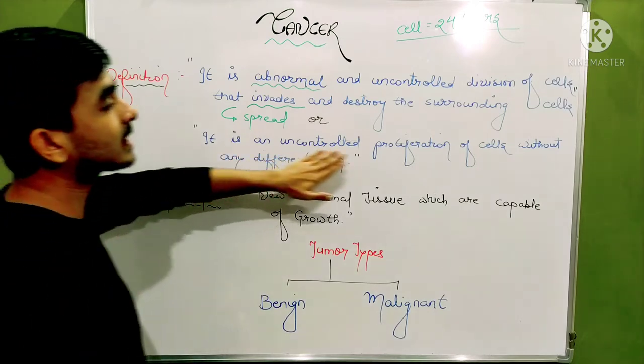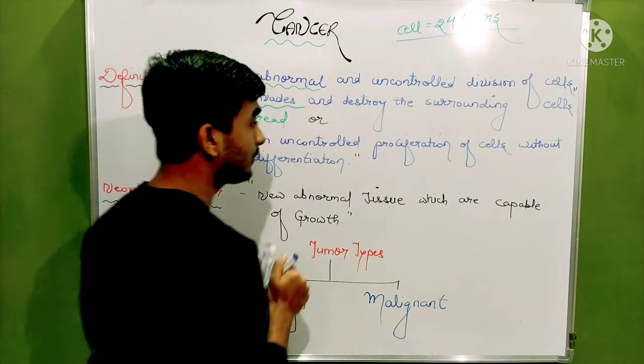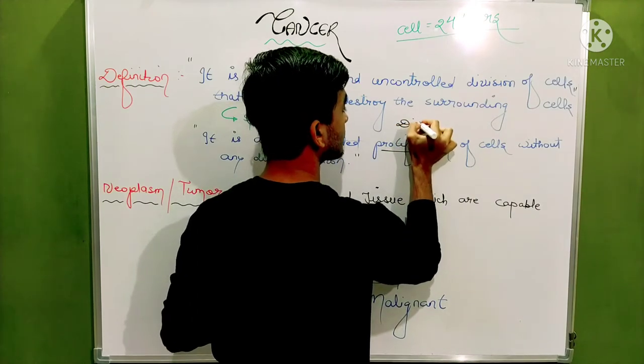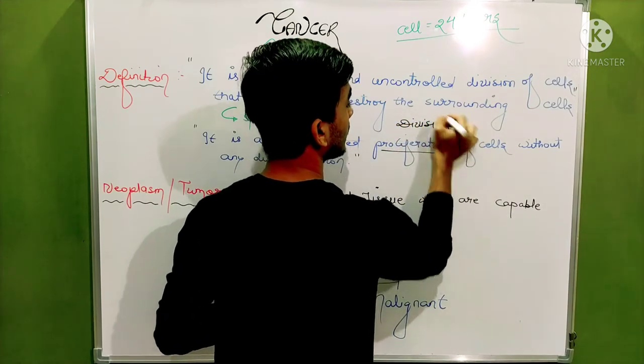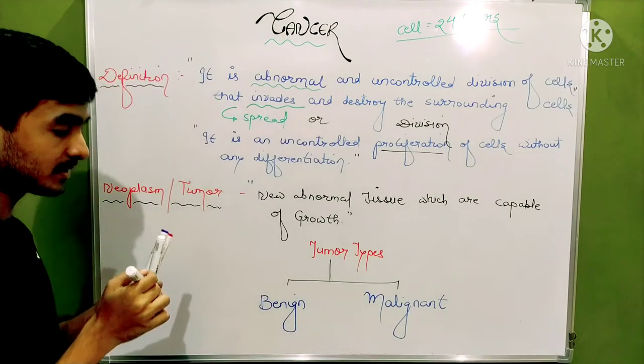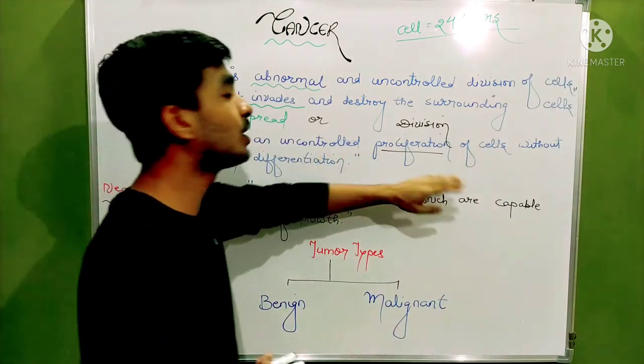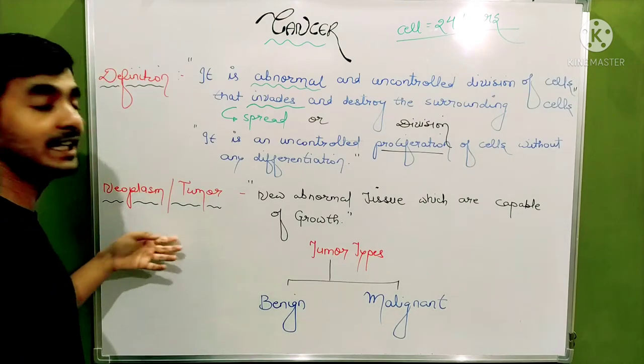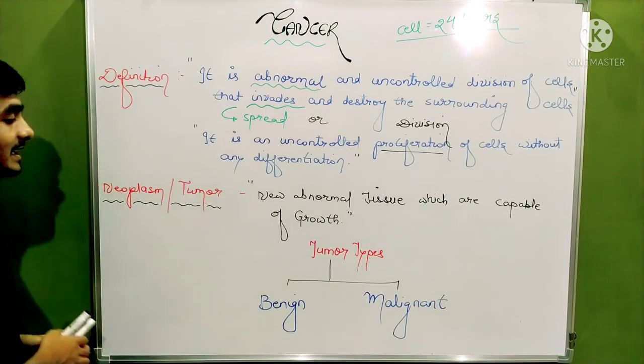Or you can say that it is an uncontrolled proliferation. Proliferation means division of cells without any differentiation - cells go on dividing without performing any sort of function. Now what are tumour and neoplasm?